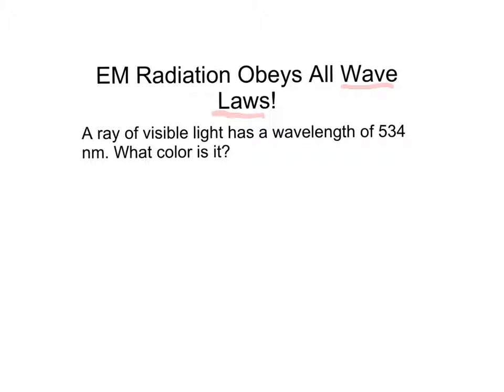Well, if I want to know the color of light, I have to look up the frequency, and that's because the reference table tells me colors according to frequencies. So, let me find the frequency of the light given the wavelength. Since I know all wave laws are obeyed, I know speed equals wavelength times frequency is true, and that's equal to the speed of light. So, that means the frequency is equal to the speed of light divided by the wavelength.